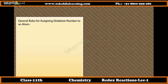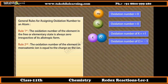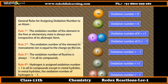General rules for assigning oxidation number. Rule 1: The oxidation number of an element in the free or elementary state is always 0, irrespective of its allotropic form. Rule 2: The oxidation number of an element in a monoatomic ion is equal to the charge on the ion. Rule 3: The oxidation number of fluorine is always -1 in all its compounds. Rule 4: Hydrogen is assigned oxidation number +1 in all its compounds except in metal hydrides, where the oxidation number of hydrogen is -1.